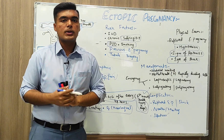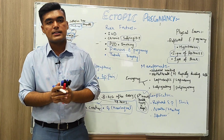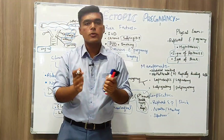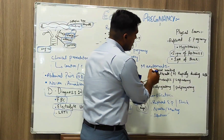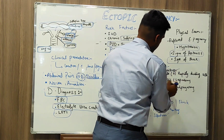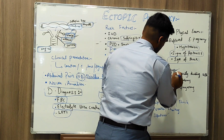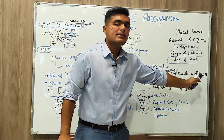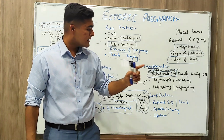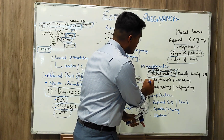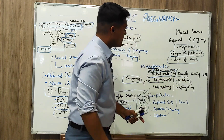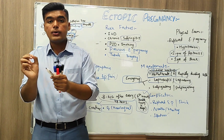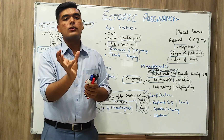Now we move to management of ectopic pregnancy. Management is based on whether the patient is symptomatic or asymptomatic, and the location of the ectopic pregnancy. Watchful waiting is used in asymptomatic cases. Methotrexate is used when symptoms occur — it suppresses rapidly dividing cells. In emergency management, laparoscopy is performed, with laparotomy preferred. Salpingectomy is complete removal of the fallopian tube, while salpingostomy is removal of part of the fallopian tube.